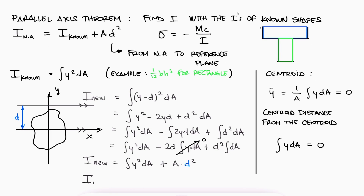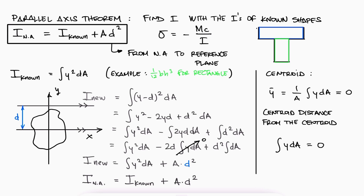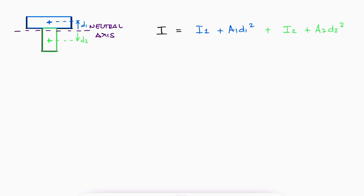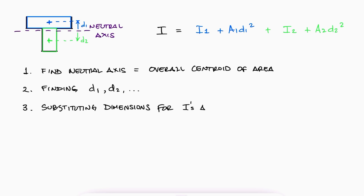If we want to find the second moment of area about the neutral axis — which is what we use in our bending stress equation — all we need to find is the distance between the neutral axis and the axis that passes through the centroid, or any other point of reference, of our known I shape. For the T-shape beam example, the overall second moment of area needed to find stresses would be found by adding the I's from the two rectangles together, remembering to account for the distance between the neutral axis and the centroids of each rectangle. The steps would be to find the neutral axis first, which is finding the overall centroid of the cross section, finding the distances to both individual centroids, and substituting the values for b and h for each rectangle. At the end of this video, you'll find an example where we use this information.